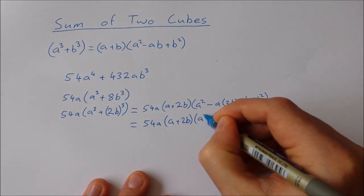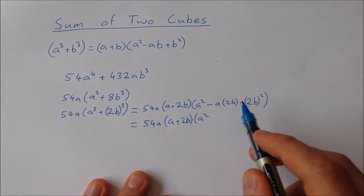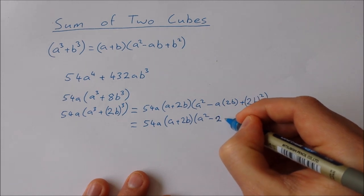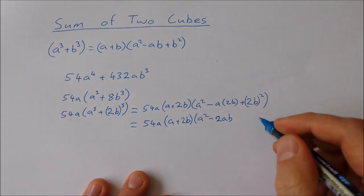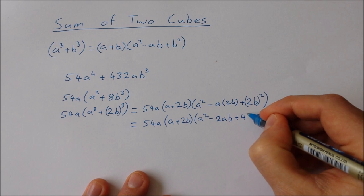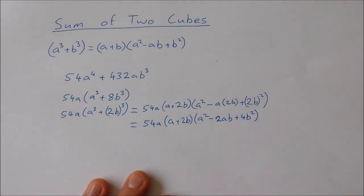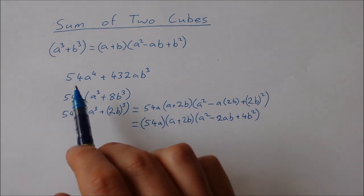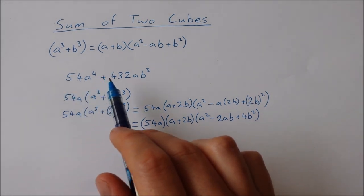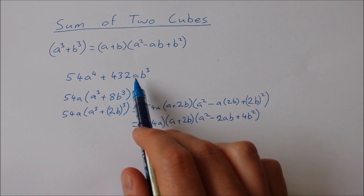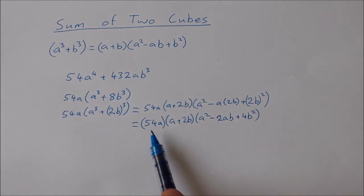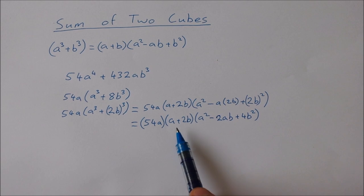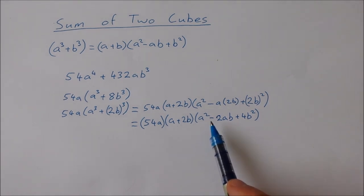Times a² - 2ab + 4b². And I'll just put brackets around this 54a as well. So I have my three factors of 54a⁴ + 432ab³ factorized as (54a)(a + 2b)(a² - 2ab + 4b²).